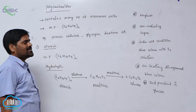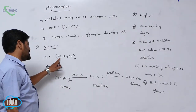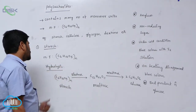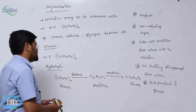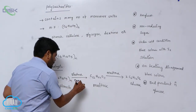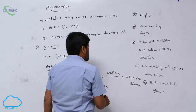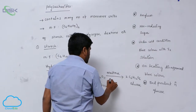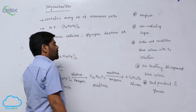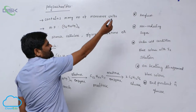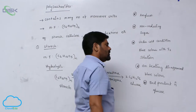Starch is a polysaccharide. Its molecular formula is (C6H10O5)n. Starch in the presence of diastase enzyme forms maltose. Maltose in the presence of maltase enzyme forms two molecules of glucose. Starch is generally known as amylum.